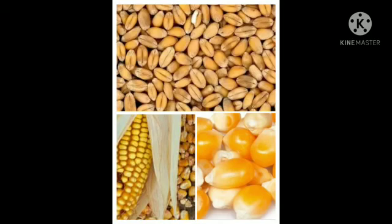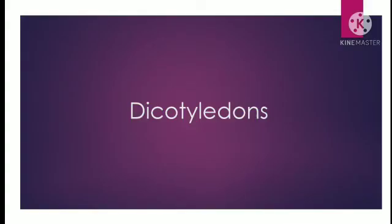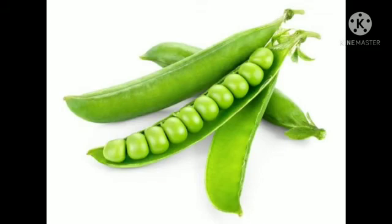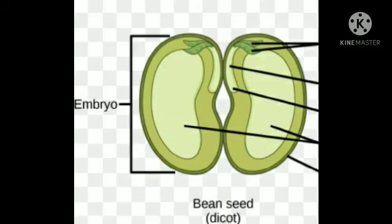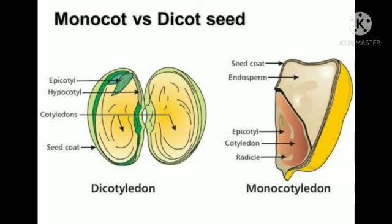Monocotyledon plants produce seeds with one seed leaf. Here you can see the picture of wheat grains and maize grains — they have one seed leaf, meaning their seed cannot be divided into two equal parts. Dicotyledon plants have two seed leaves, meaning their seed can be divided into two equal parts.